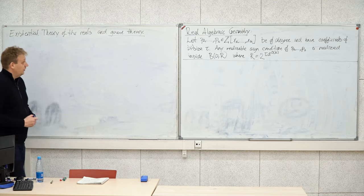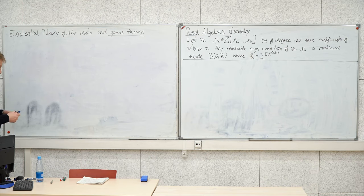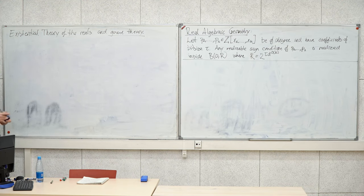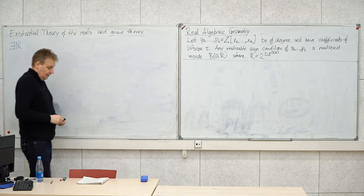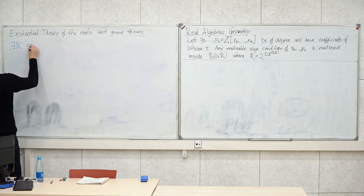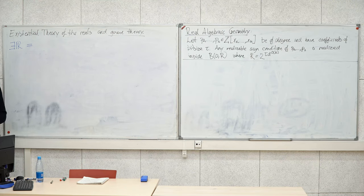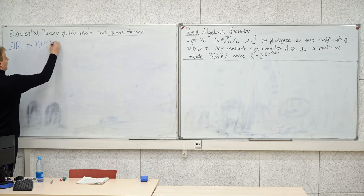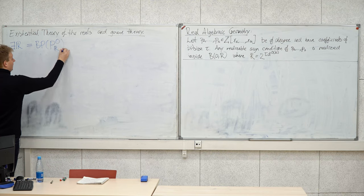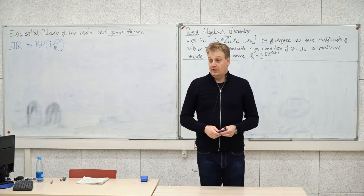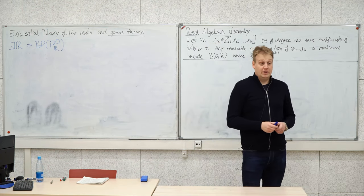Let me remind you what we'll be doing. We were defining the complexity class corresponding to the existential theory of the reals — I use the notation ∃ℝ (exist reals). It has many different definitions. One way is by means of the Blum-Shub-Smale model of computation — the Boolean part of polynomial time over the reals without constants. Another way is to specify a complete problem and take the closure under polynomial-time many-one reductions.